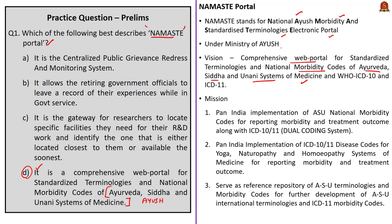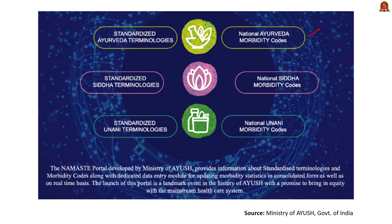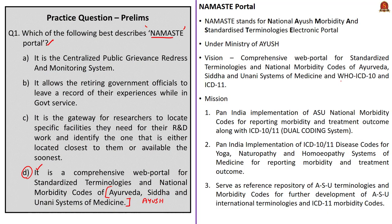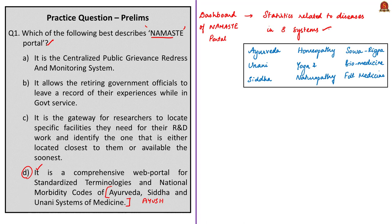This portal is developed by the Ministry of Ayush — specifically by the Central Council for Research in Ayurvedic Sciences, which is an autonomous body of the Ministry of Ayush. This portal mainly serves two purposes: it provides standardized terminologies used in three systems of medicine — Ayurveda, Siddha, and Yunani — and it provides national morbidity codes or national disease codes in these three systems. It also provides terms and morbidity codes under WHO International Classification of Diseases ICD-10 and ICD-11. In the dashboard, we can also find statistics related to diseases in eight systems: Ayurveda, Yunani, Siddha, Homeopathy, Yoga and Naturopathy, Sovarigpa, Biomedicine, and Folk Medicine.